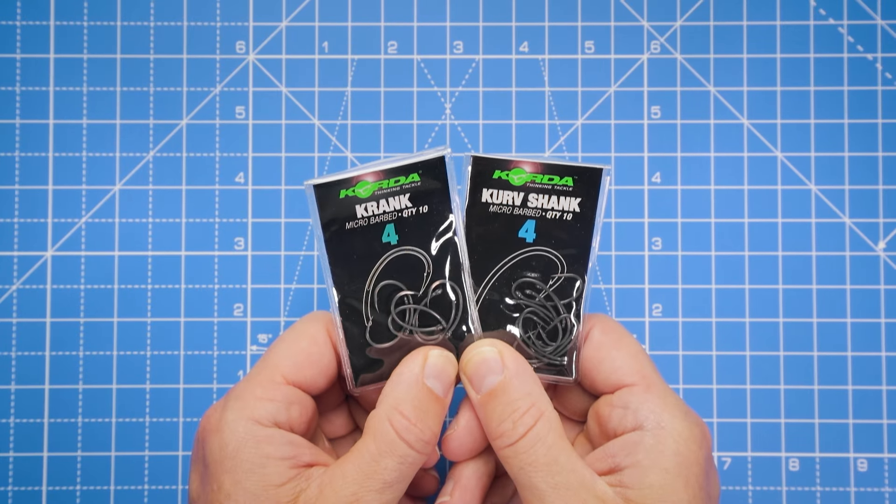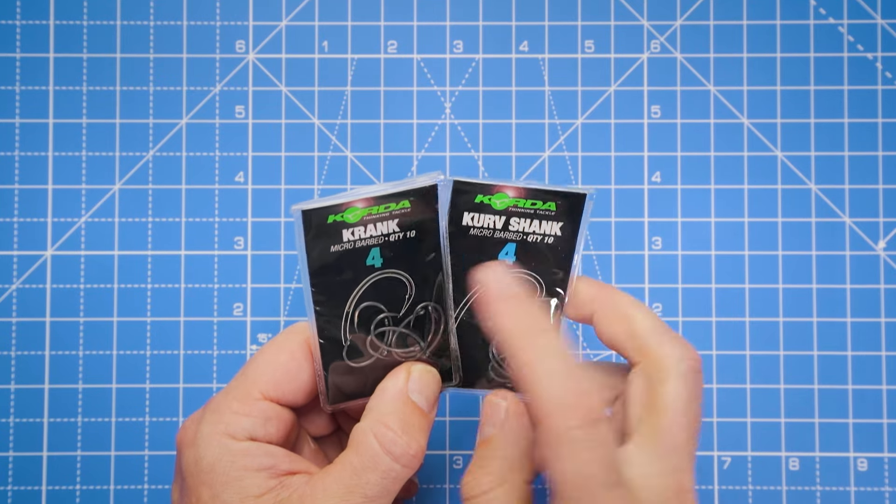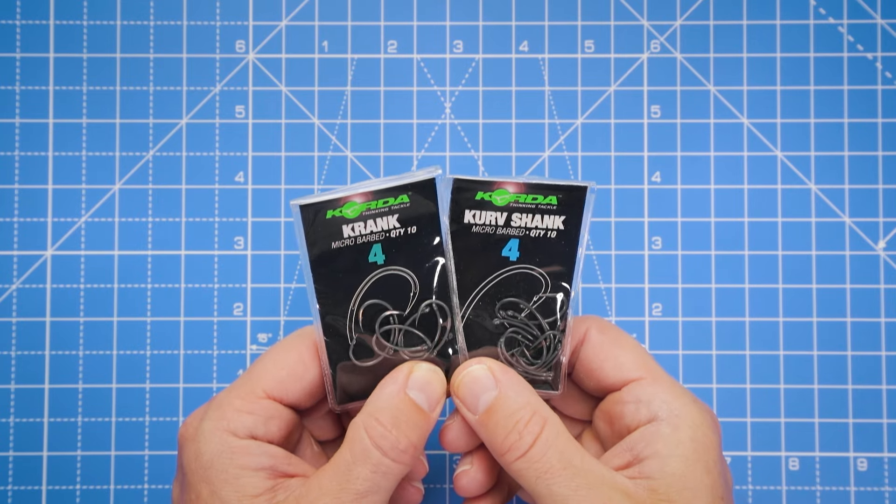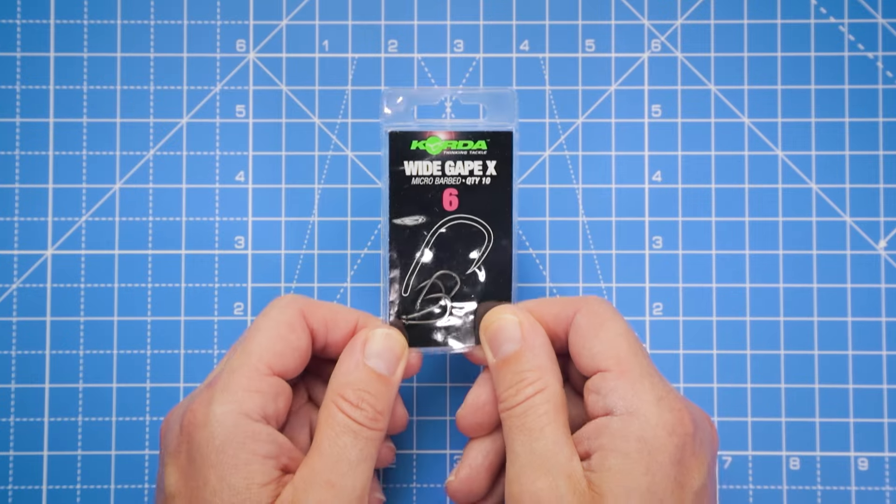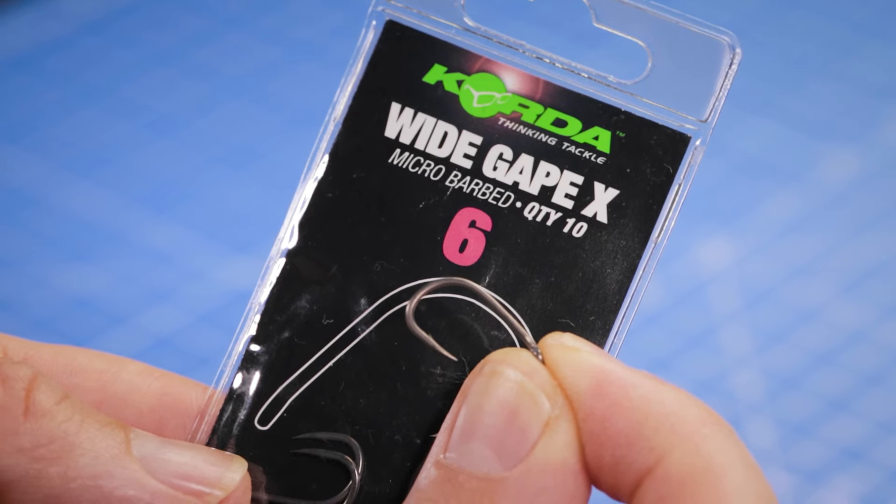The great thing about the spinner rig is it's quite versatile when it comes to your choice of hook. A crank hook, a curved shank hook, even large size 4 hooks are all suitable for the spinner rig. But today we're going to use one of my own personal preferences, and that's a size 6 wide gape hook.